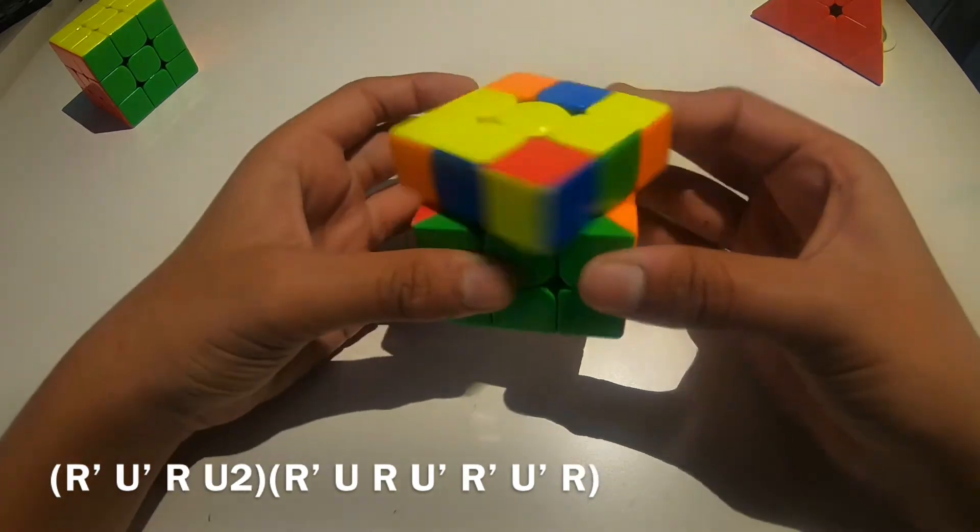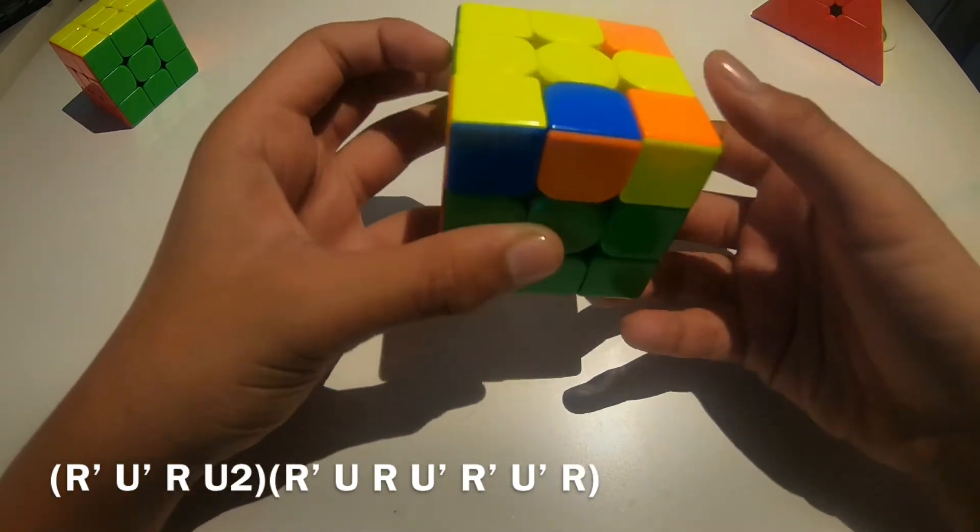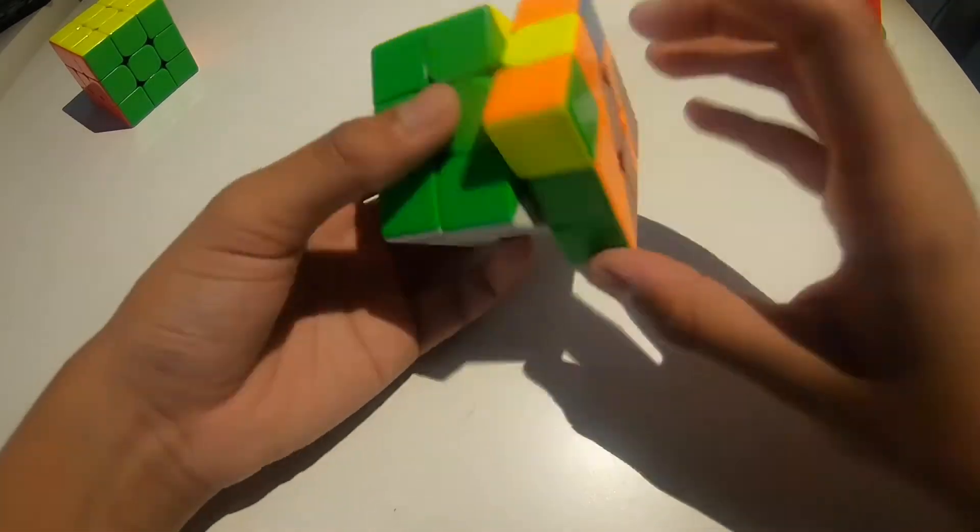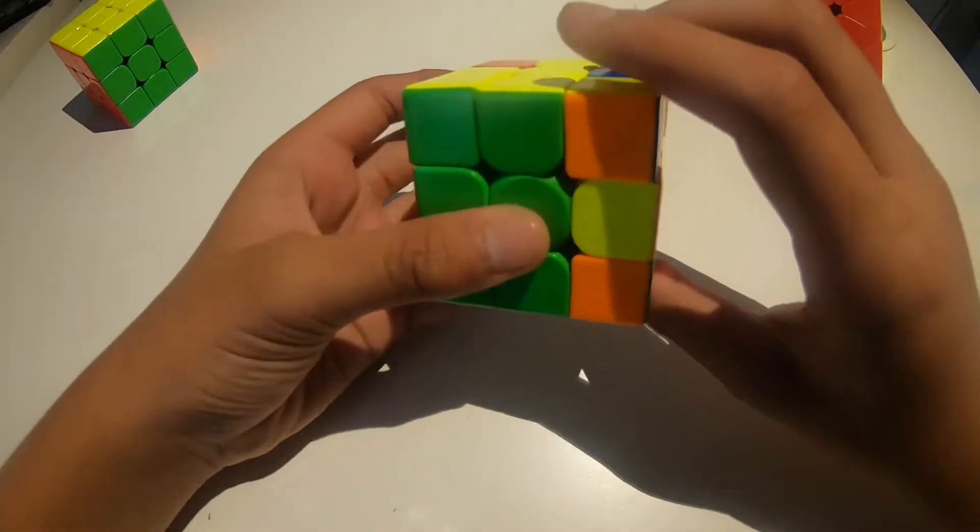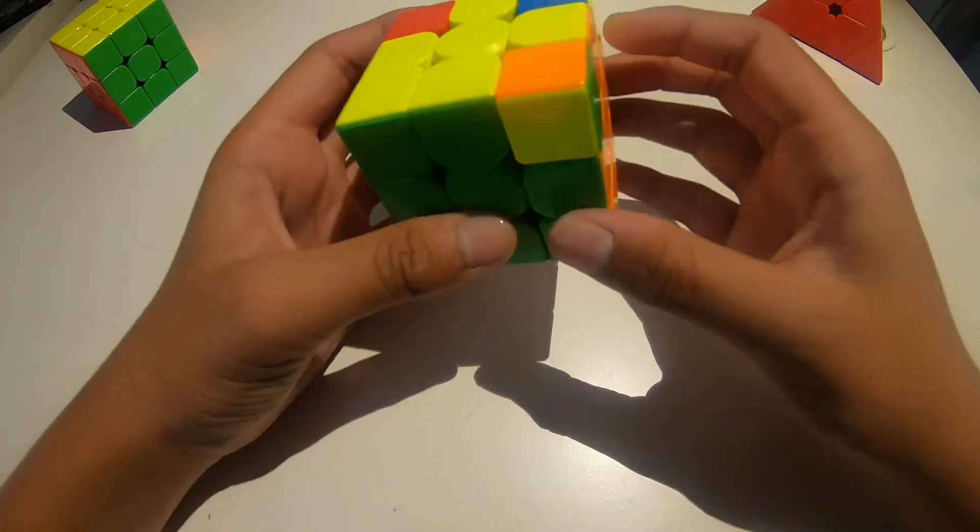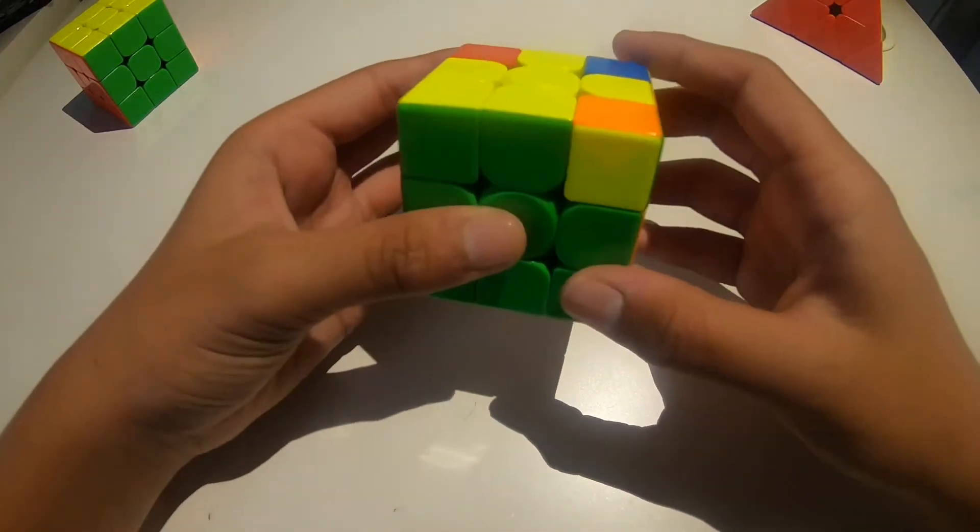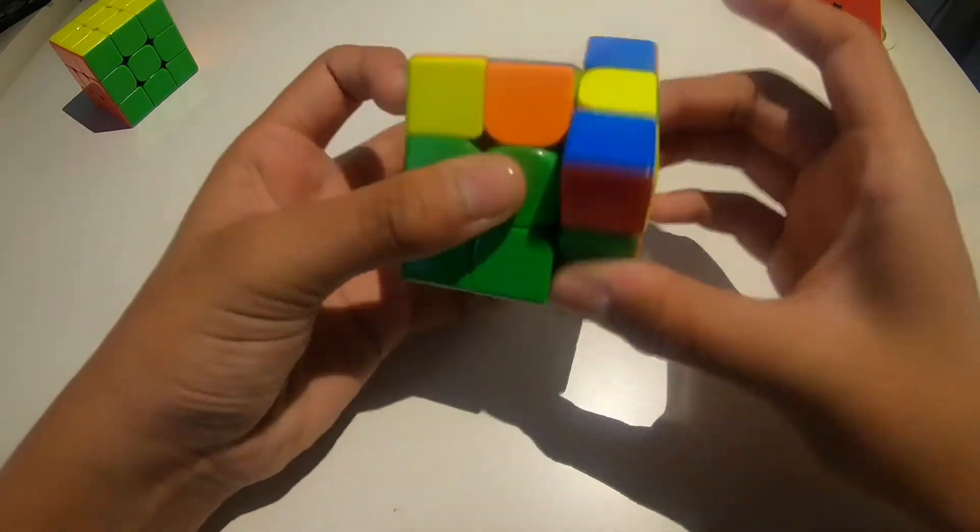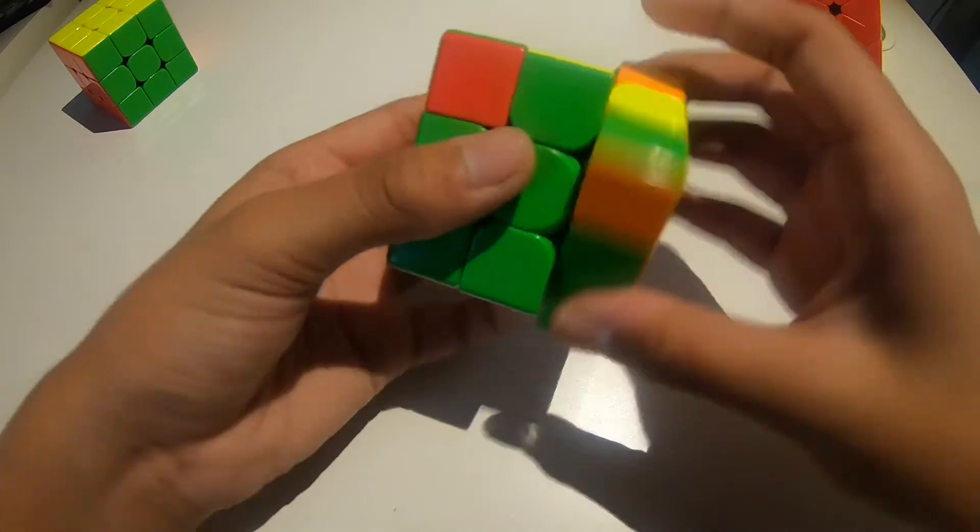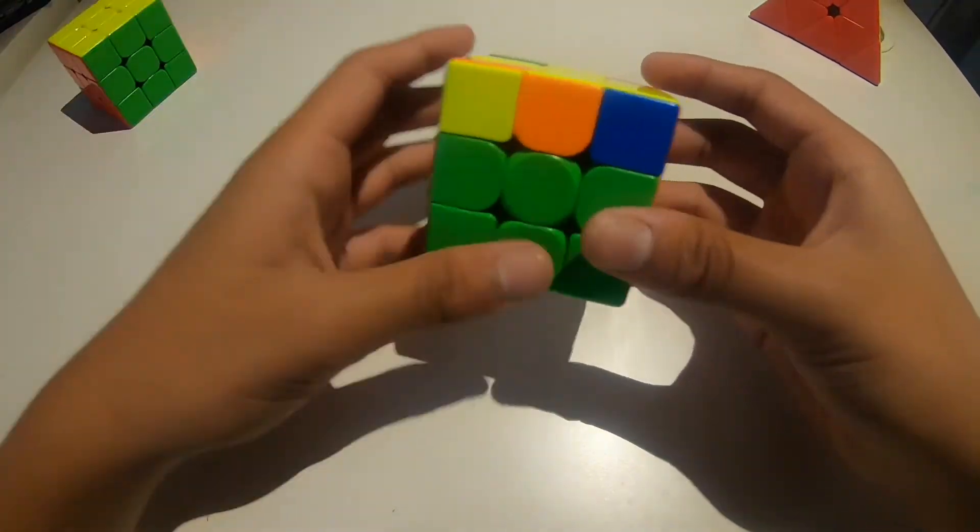So basically, what you do is you take it out like this, and you have this case. So it's a U2, and then you can either re-grip, or go like this. So basically, it goes something like that.